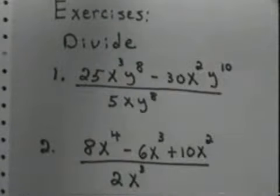The second one, 8x to the 4th minus 6x cubed plus 10x squared divided by 2x cubed.